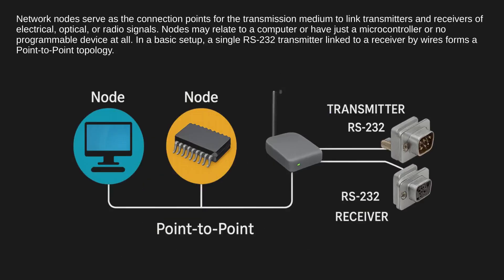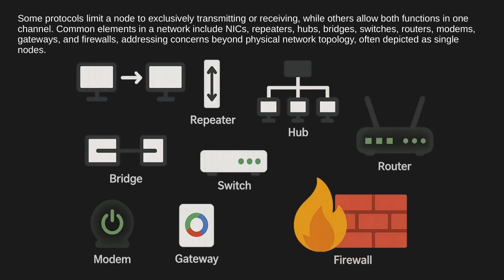Network nodes serve as the connection points for the transmission medium to link transmitters and receivers of electrical, optical, or radio signals. Nodes may relate to a computer or have just a microcontroller or no programmable device at all. In a basic setup, a single RS-232 transmitter linked to a receiver by wires forms a point-to-point topology. Some protocols limit a node to exclusively transmitting or receiving, while others allow both functions in one channel.